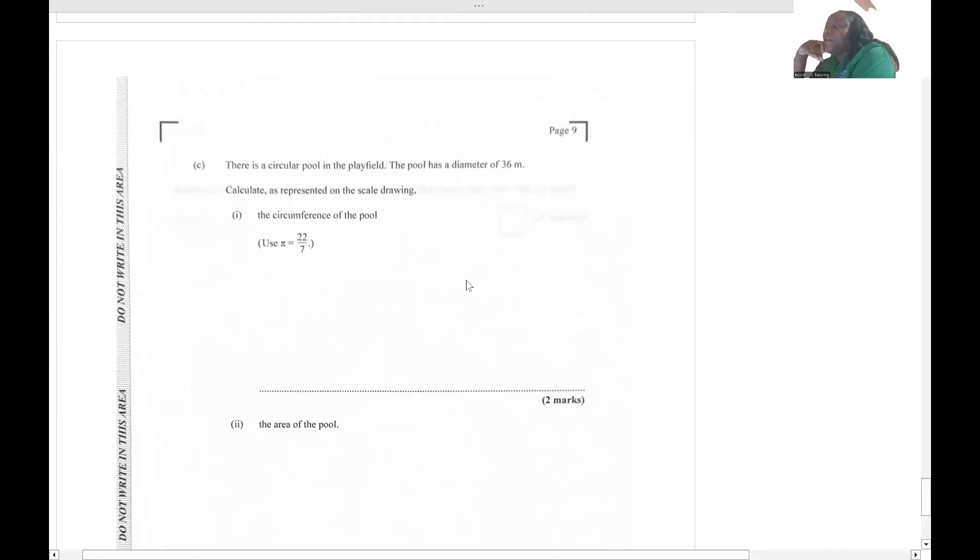There's a circular pool on the playfield with a diameter of 36 meters. Calculate as represented on the scale drawing, the circumference of the pool. How do we calculate circumference? Diameter by pi or 2πr. In this case, we have the diameter, so diameter by pi. Diameter is 36.